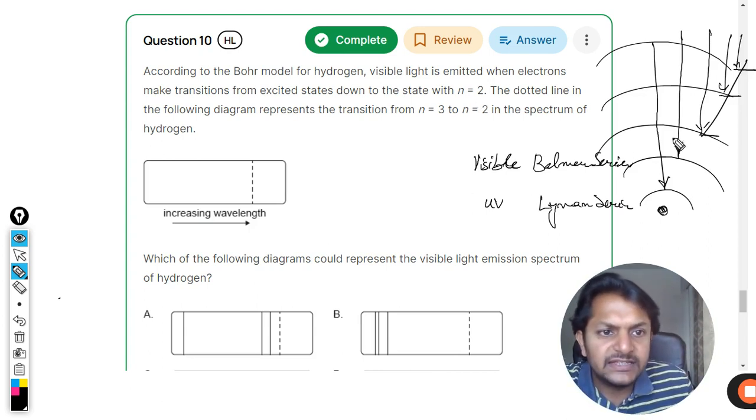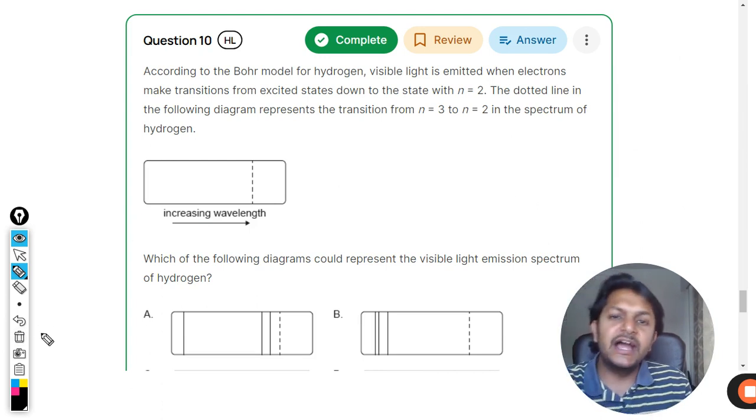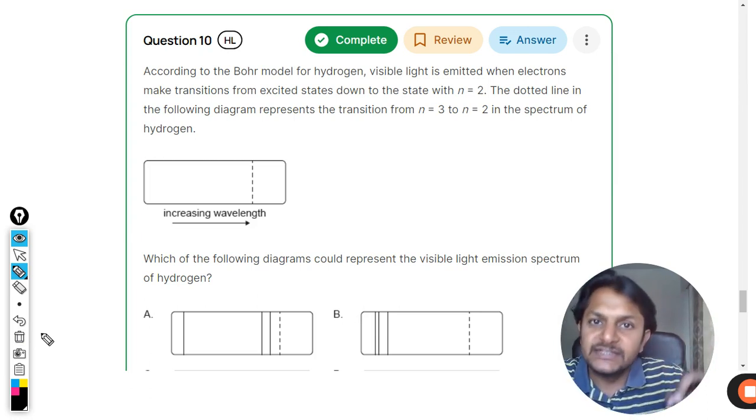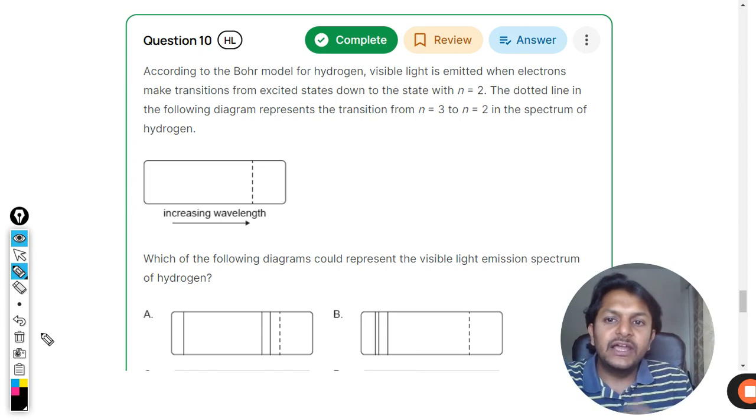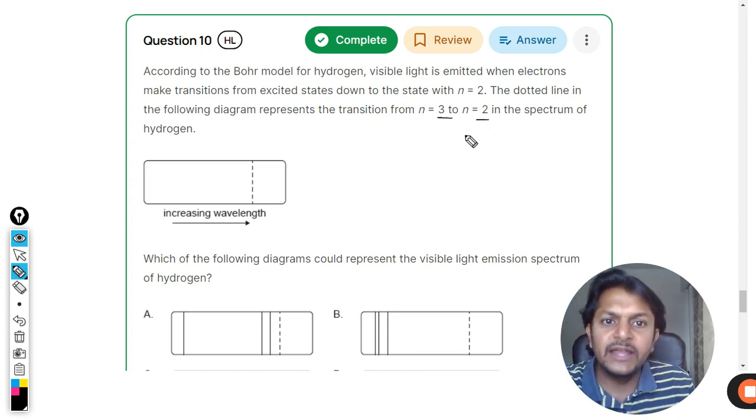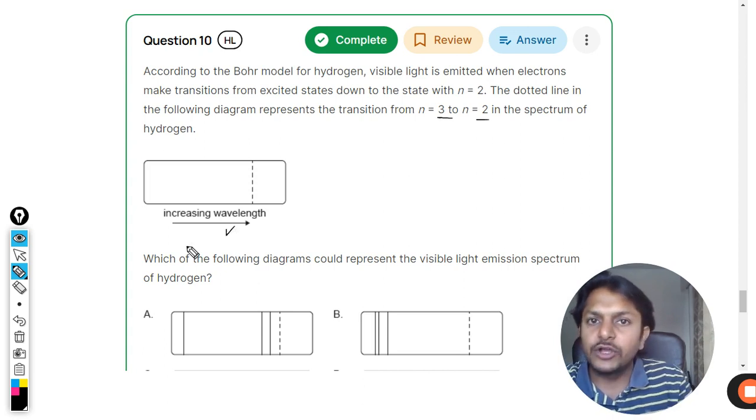Now it is given that yes, they are jumping into n equals two, so they're talking about the Balmer series. The electron can make transitions from any higher level but has to come to the second shell. The dotted line shown represents the transition from n equals three to n equals two and is talking about the wavelength.